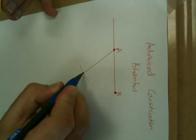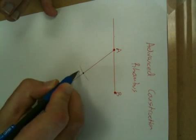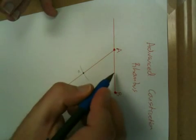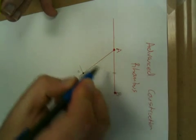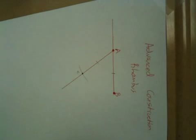We mark this point as C. And because we know that these two are the same length, we have to mark them as such.